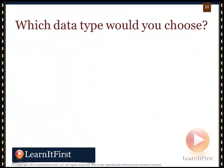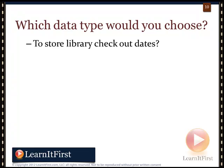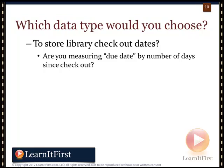Let's do a practical example: what data type would you choose to manage a library where users check out books and have a due date? Part of this depends on how you calculate the due date. If the rule is 'books must be returned two days after checkout,' you're only working at the day level — no need to store time. In that case, just use DATE: three bytes per row, range 0001 to 9999.